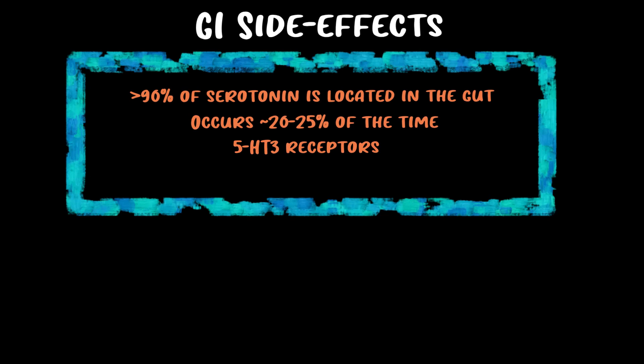Diarrhea is also a known side effect, occurring around 10% of the time. Sertraline anecdotally seems worse, occurring about 20% of the time — giving it the appropriate nickname 'squirtuline.' You can predict a medication's bowel effect by its mechanism: serotonin increases gut motility causing diarrhea, while acetylcholine and norepinephrine decrease gut motility, making constipation the more likely side effect for those agents.